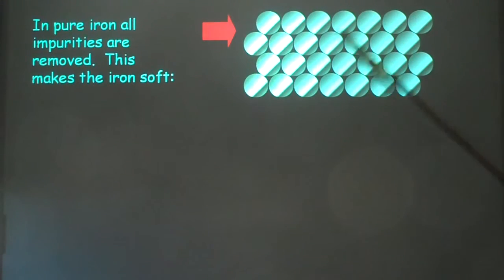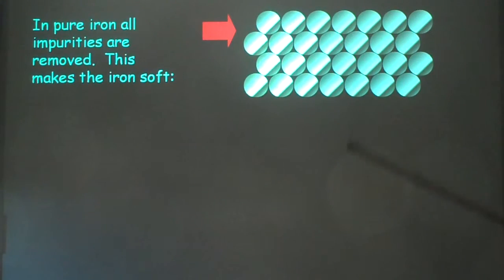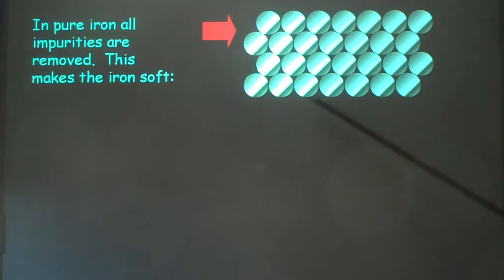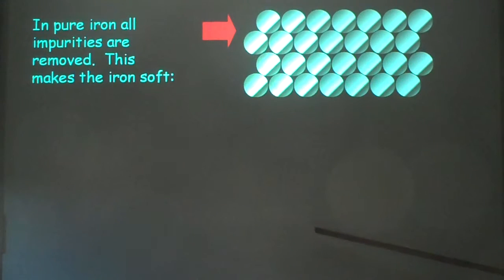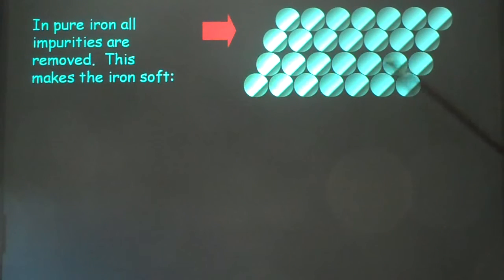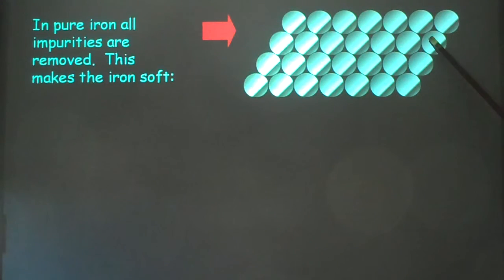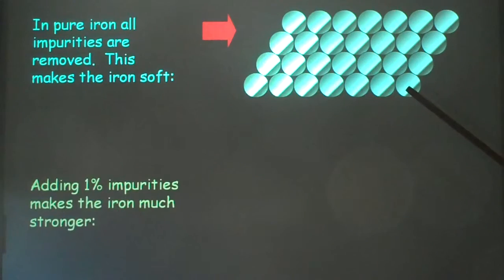Pure metal. Layers of identical atoms. It's an element — all the atoms are the same and it is soft. And the reason it's soft — what you have to write in the exam answer — is that the layers can slide over each other, which means metals can be drawn into wires.